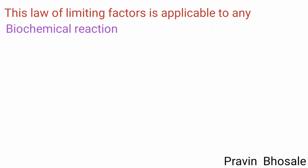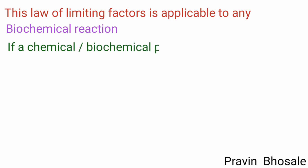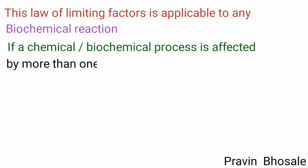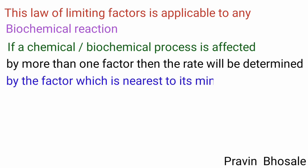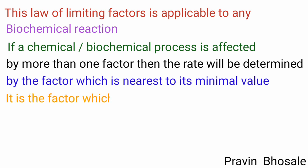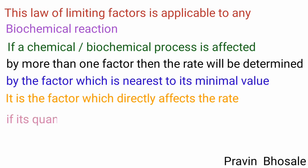It states that if a biochemical process is affected by more than one factor, then the rate will be determined by the factor which is nearest to its minimum value. It is the factor which directly affects the rate if its quantity is changed.